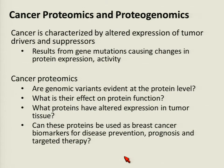Cancer is characterized by altered expression of tumor drivers and suppressors, which result from gene mutations causing changes in protein expression and activity. We are using cancer proteomics to understand this genetic variation. The questions we're looking to answer are: whether genomic variants are evident at the protein level, what their effect on protein function is, and which proteins have altered expression in tumor tissue that could serve as breast cancer biomarkers for disease prevention, prognosis, and targeted therapy.